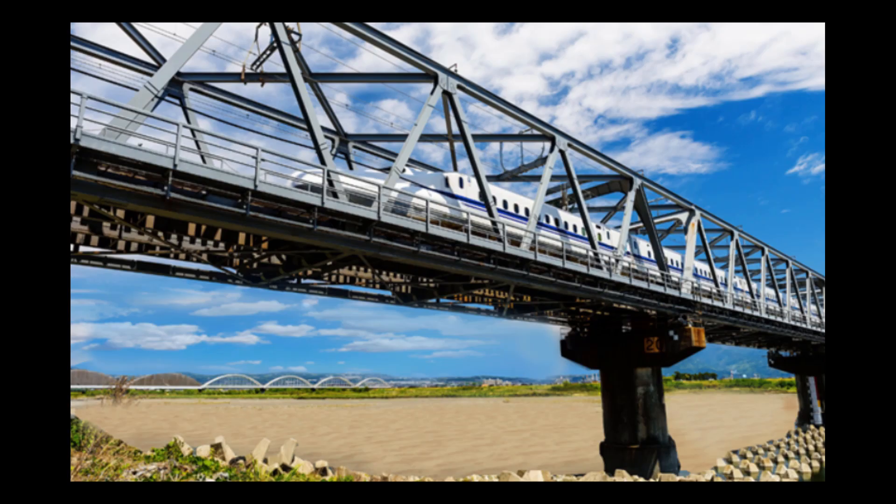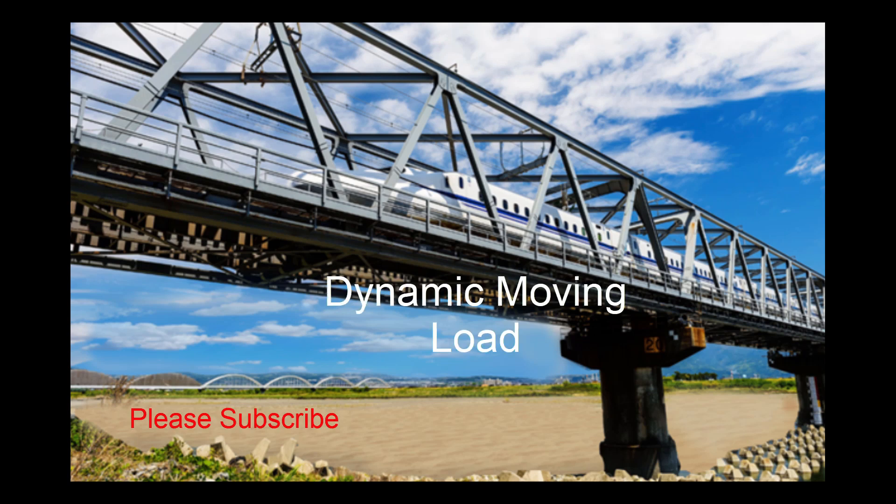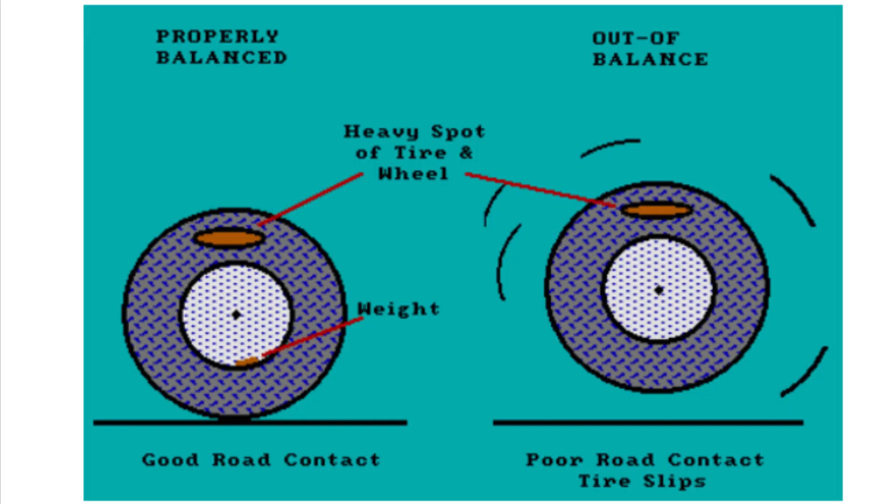Welcome to this session on the discussion of the dynamic moving load or pulsating moving load on any structure like a bridge or deck. Most of you might be aware that we have the option to generate the static moving load and perform analysis, but how about the dynamic moving load? A vehicle speeding over a bridge has a wheel position that is not constant, imparting a constant pulsating vibration on the bridge. This pulsating force can be due to a slight unbalanced rotational force in the wheel or due to some undulation in the road.